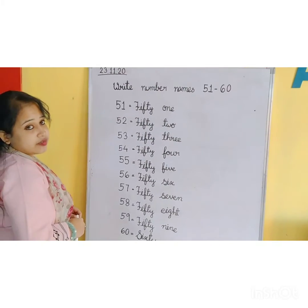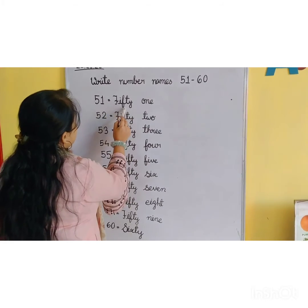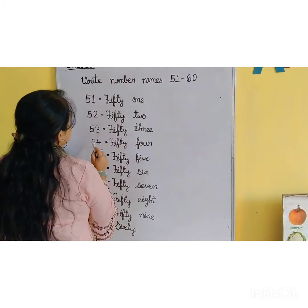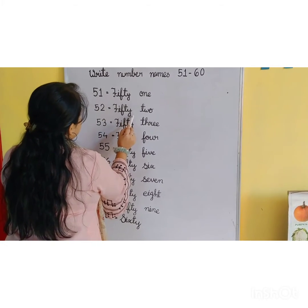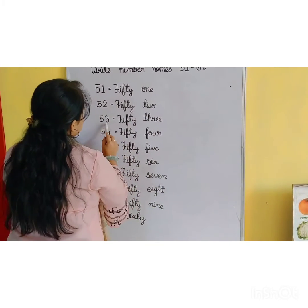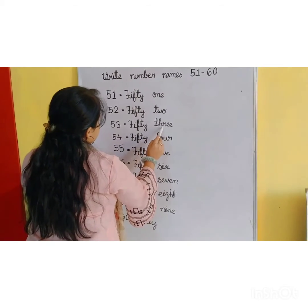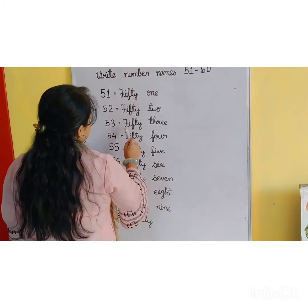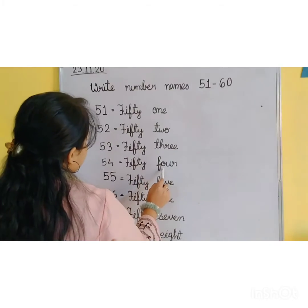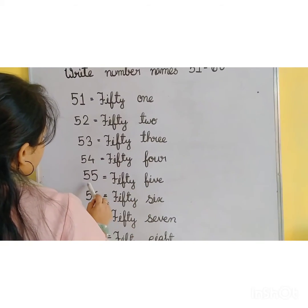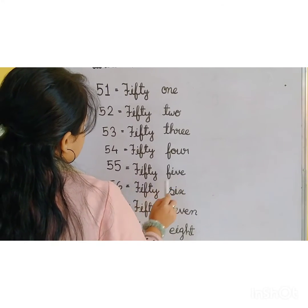All of you, read the number names with me. 51: F-I-F-T-Y O-N-E, 1, 51. 52: F-I-F-T-Y T-W-O, 2. 53: F-I-F-T-Y T-H-R-E-E, 3, 53. 54: F-I-F-T-Y F-O-U-R, 4, 54. 55: F-I-F-T-Y F-I-V-E, 5, 55.